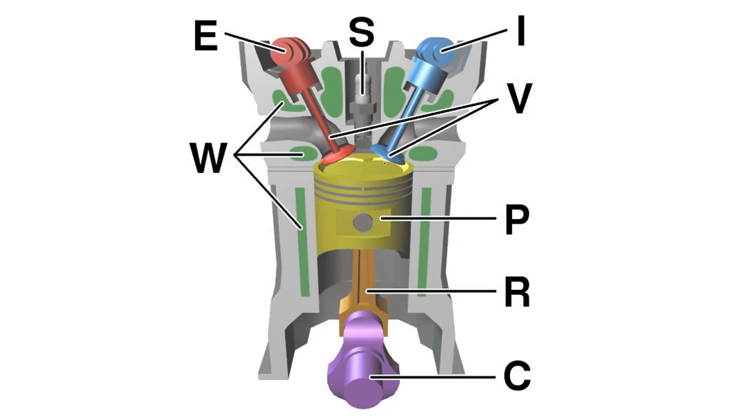Here you can see the main parts of an IC engine. This is the piston, which reciprocates inside the cylinder. The cylinder is surrounded by a cooling jacket, labeled W here, and on top there is a spark plug used for burning the fuel inside—the mixture of fuel and air.